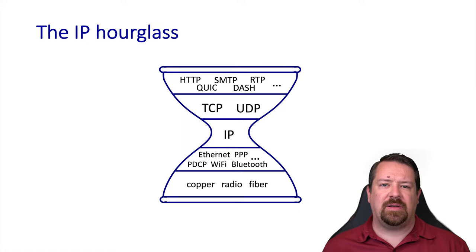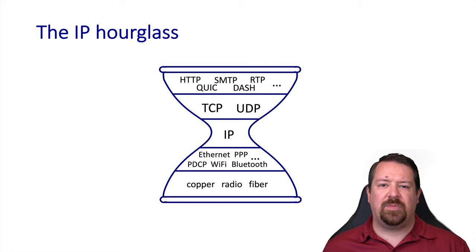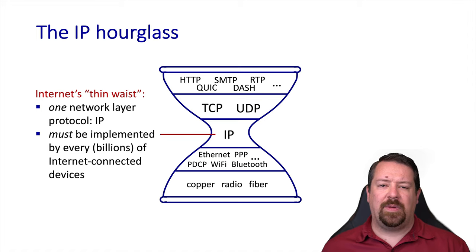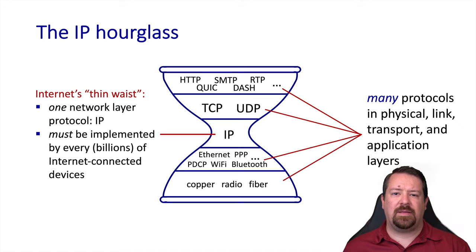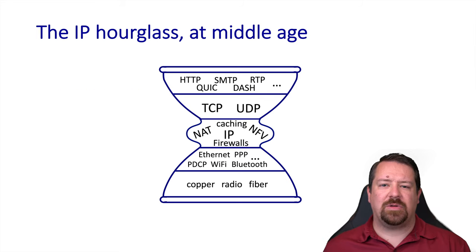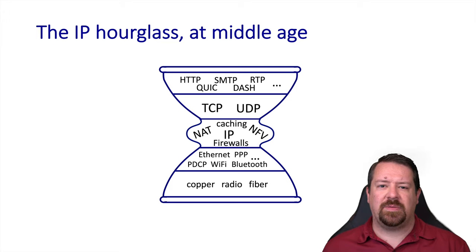What does this mean for the architecture of the internet? The architecture was specifically designed with IP as a thin waist of the internet, sometimes drawn as an hourglass diagram, where there could be lots of different underlying technologies and lots of different transport layers and application protocols. However, what's happened is the core of the internet has gotten bloated with middleboxes, which add complexity to the core and may cause incompatibilities with particular protocols above or below the IP layer.